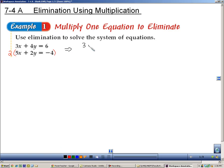The top will still be 3x plus 4y equals 6. But look what happens to the bottom. Distribute the 2 and you get 10x plus 2 times 2 is 4y, and that equals negative 8. So what I've done is I've changed the coefficient of the y to match the one up above. And when you have coefficients that are the same, you can subtract them.